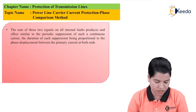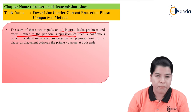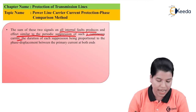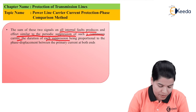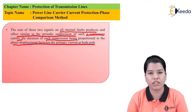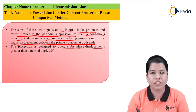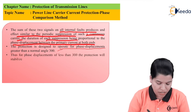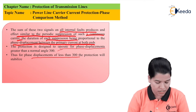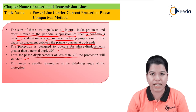The sum of the two signals on all internal faults produces effects similar to periodic separation of such a continuous carrier, and the duration of each separation is proportional to the phase displacement between the primary currents at both ends. This protection is designed to operate for phase displacements greater than 30 degrees. Therefore, for phase displacement less than 30 degrees, the protection will stabilize. This angle at which the protection stabilizes is usually referred to as the stabilizing angle of the protection.